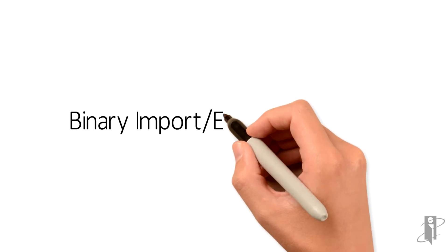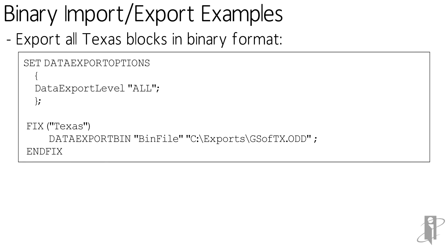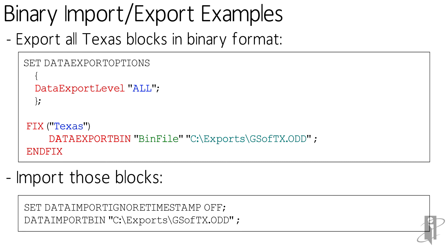In our first example, we're going to export all the blocks for Texas. Notice that export level is set to all, not something like level zero. Then we're going to say fix on texas.exportbin, bin file format, and send it out to gs_of_tx.odd — that's not to imply the great state of Texas is odd, just that the file format is. In our second example, we are not checking the outline timestamp — because who needs silly things like error checking when you know you're right — and we're using the file from before to import those compressed binary blocks.